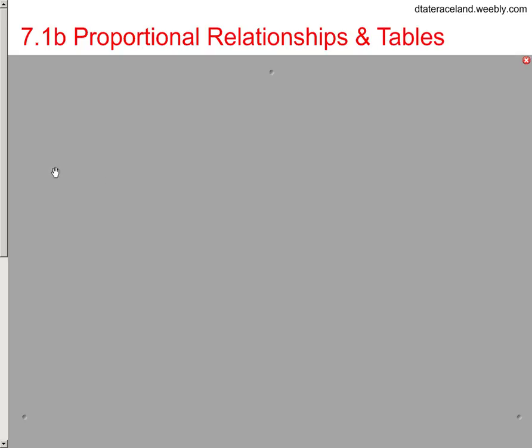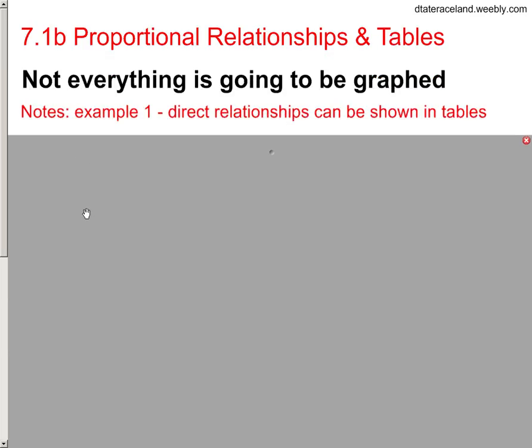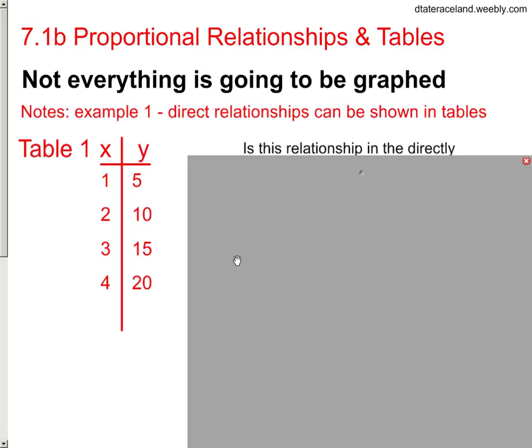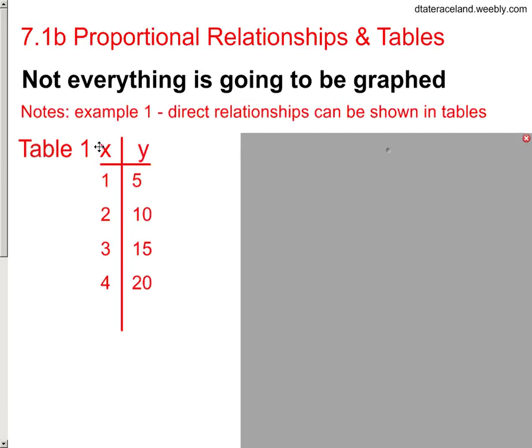Taking a look at what's happening with this list in proportional relationships, it's not always going to be graphed, and as a result, sometimes this is going to be shown to you in a table like this, an XY table, or a two-column table, or a two-row table. We could make this horizontal as well.